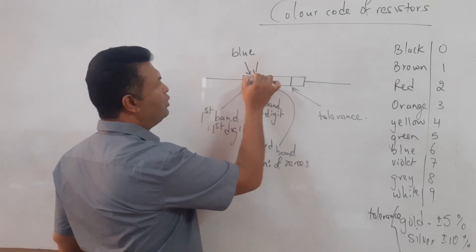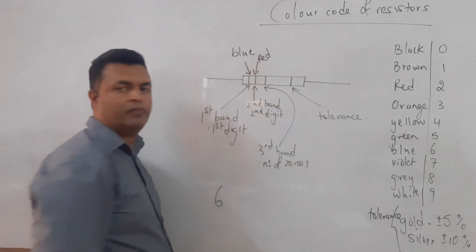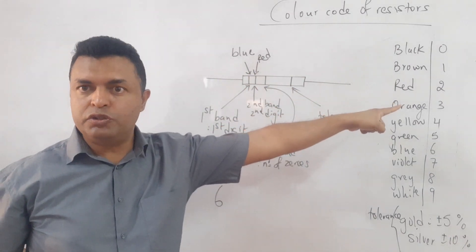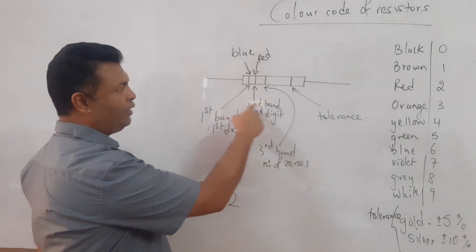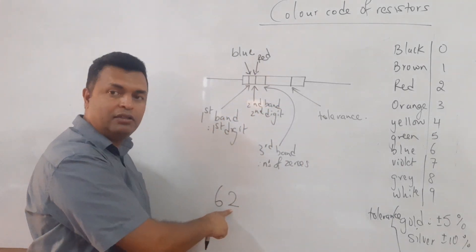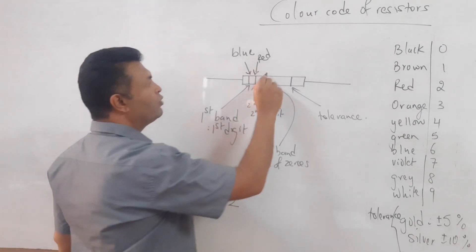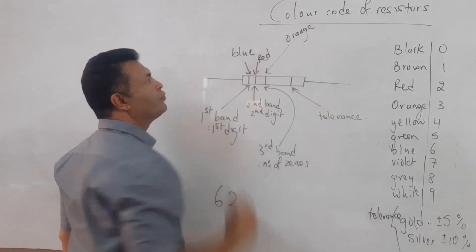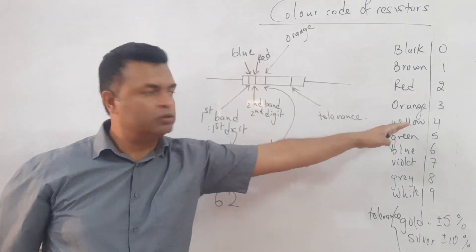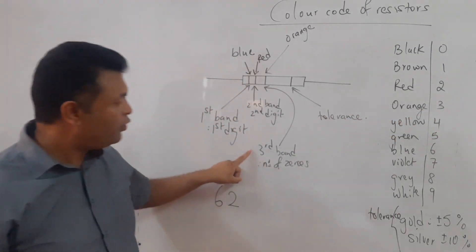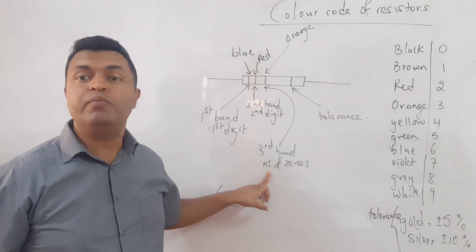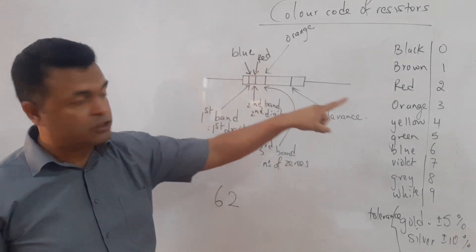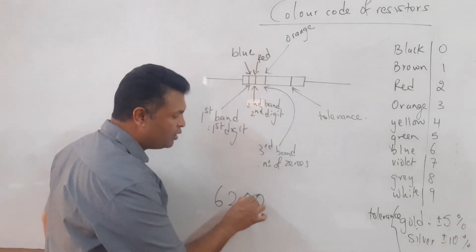The second band is red. I go to the table and red represents two, so I place two as the second digit. For the third band, let it be orange. Orange gives me three, and the third band tells me the number of zeros to add — so orange means I add three zeros.